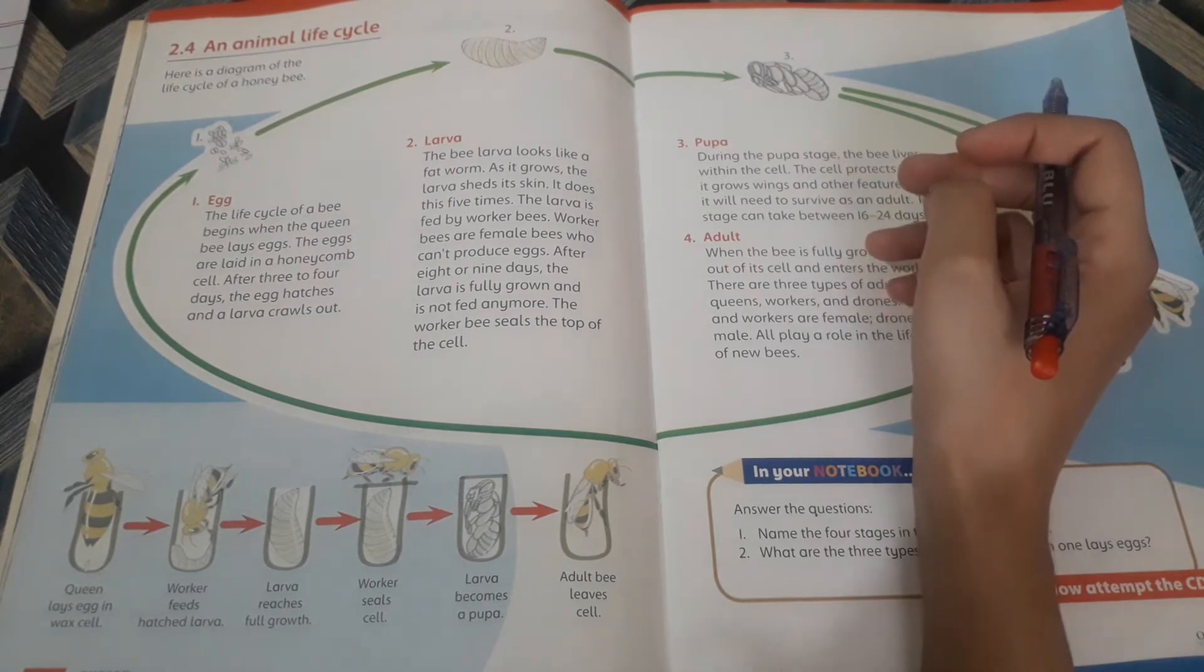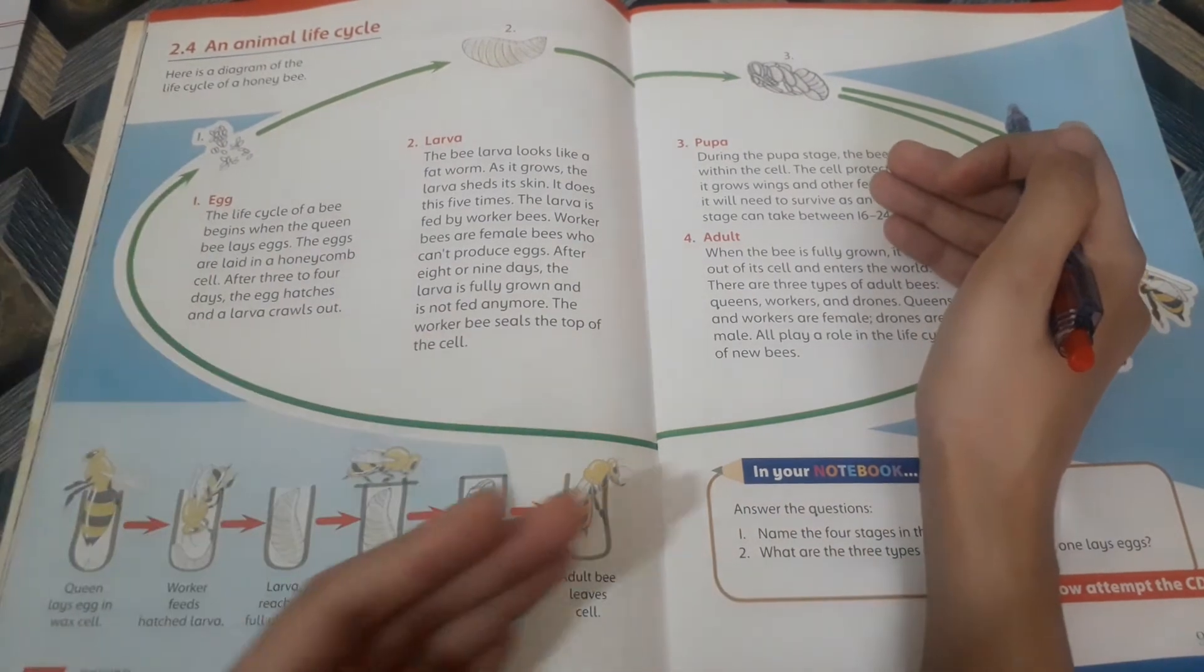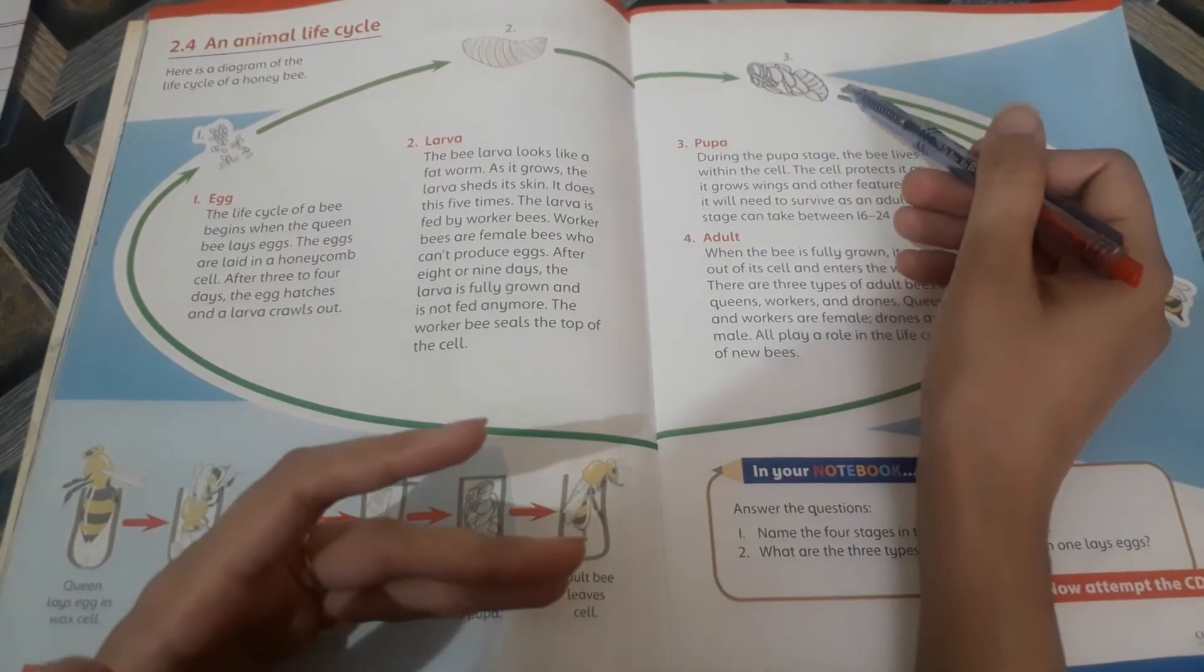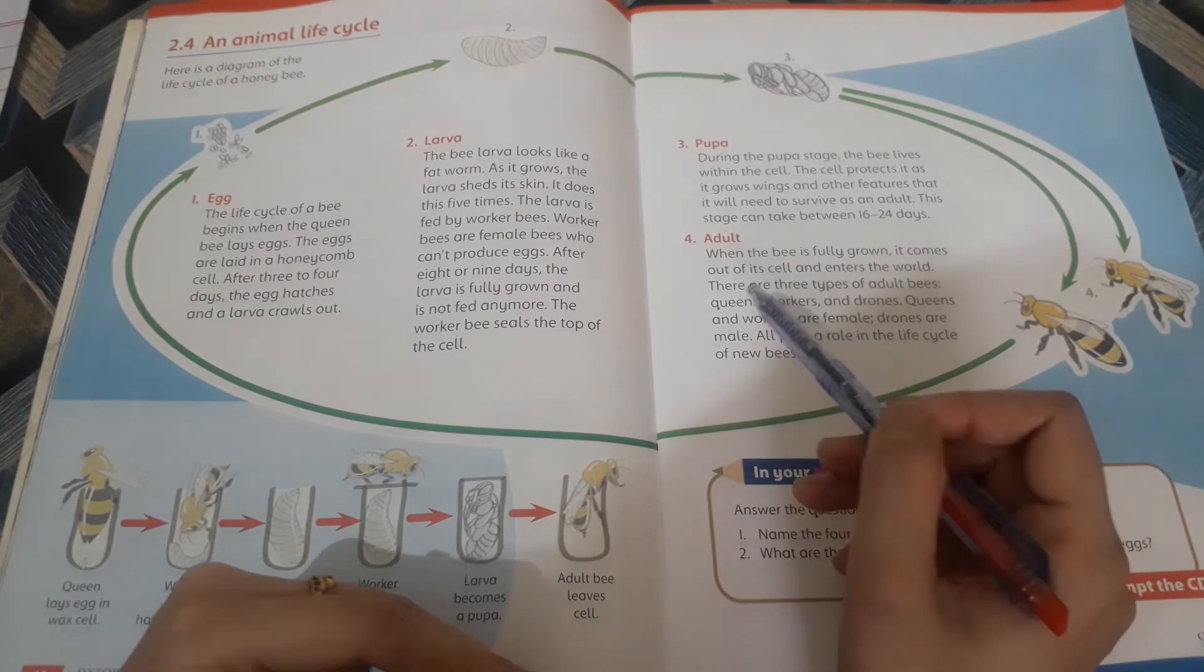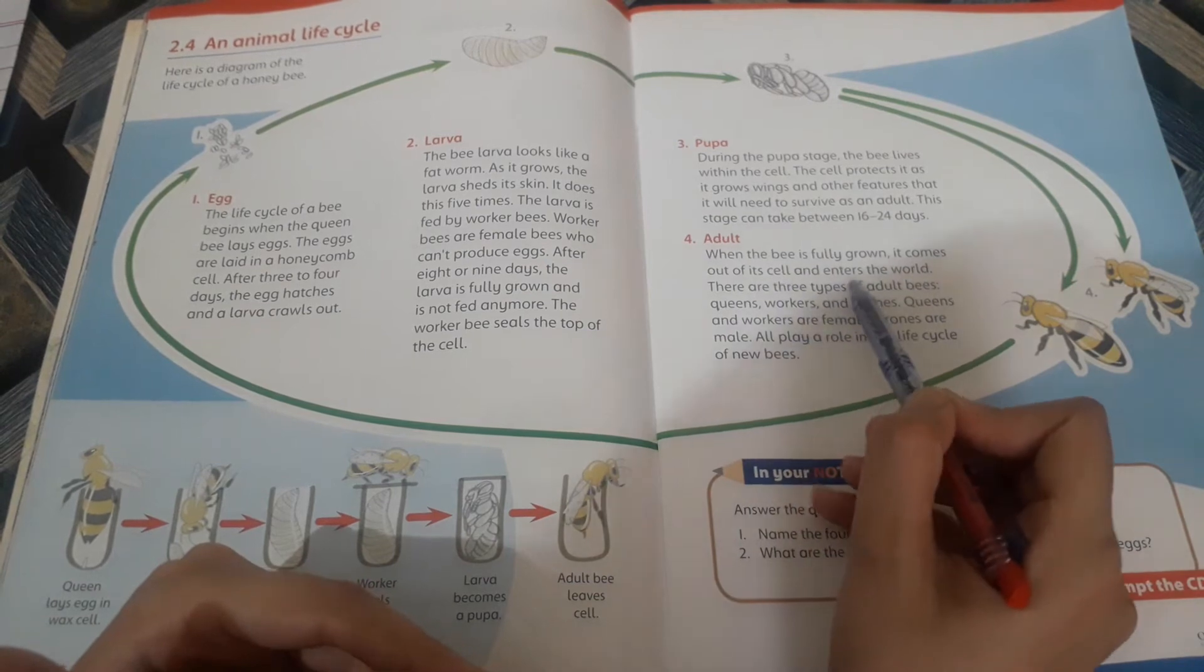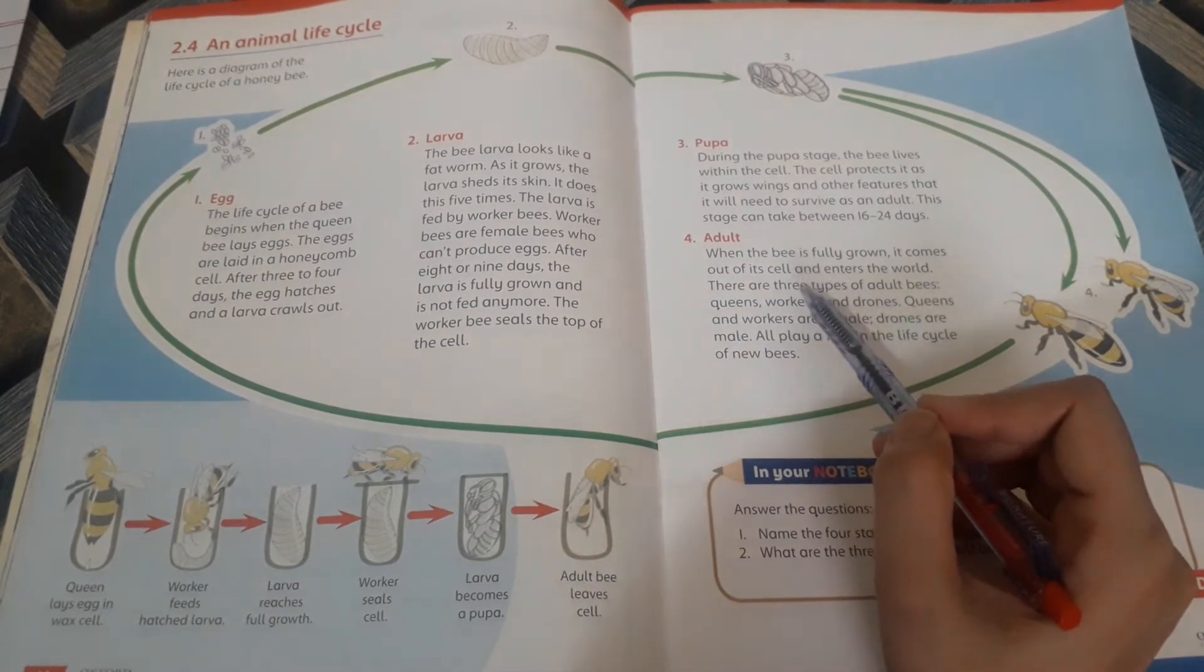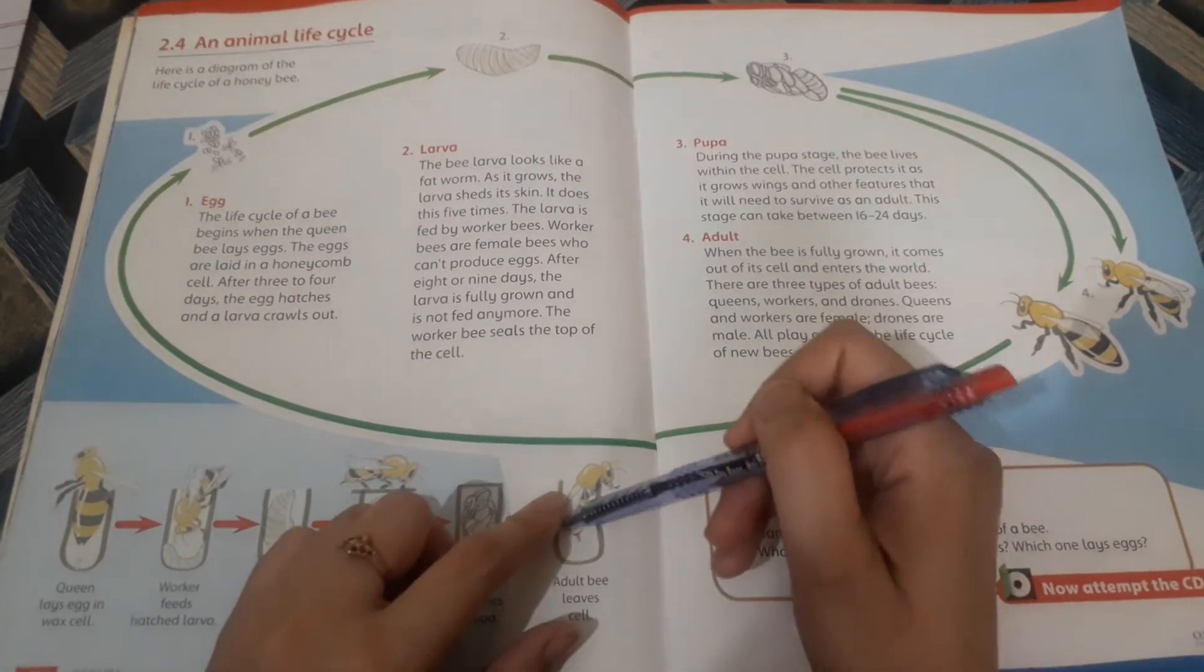Adult: After 24 days when the bee is fully grown, it comes out of the cell and enters the world. After 24 days, it becomes adult. It is fully grown and breaks the seal and comes out.